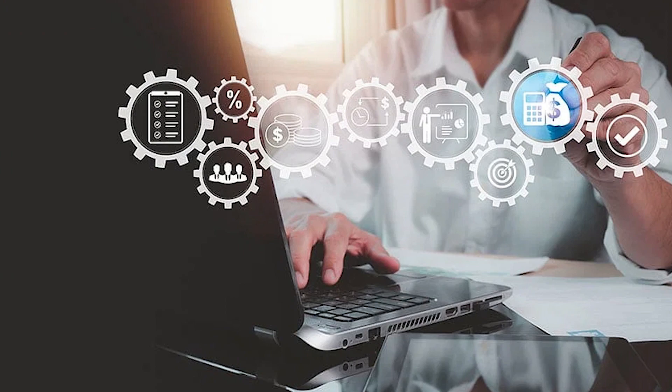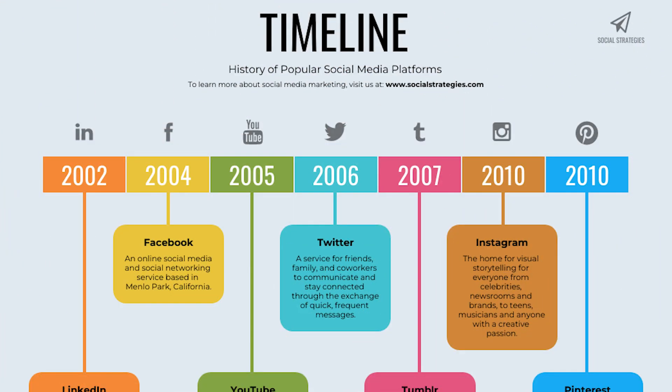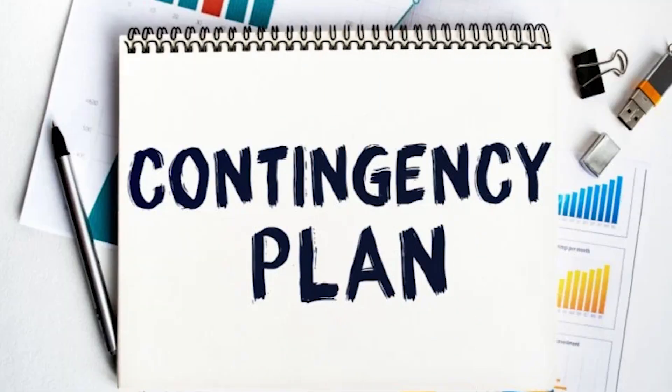4. Resources Allocation: Identify the resources, time, and effort required to implement your plan effectively. 5. Timeline: Establish a timeline with milestones and deadlines to track progress. 6. Contingency Planning: Anticipate potential challenges and develop contingency plans to address them.